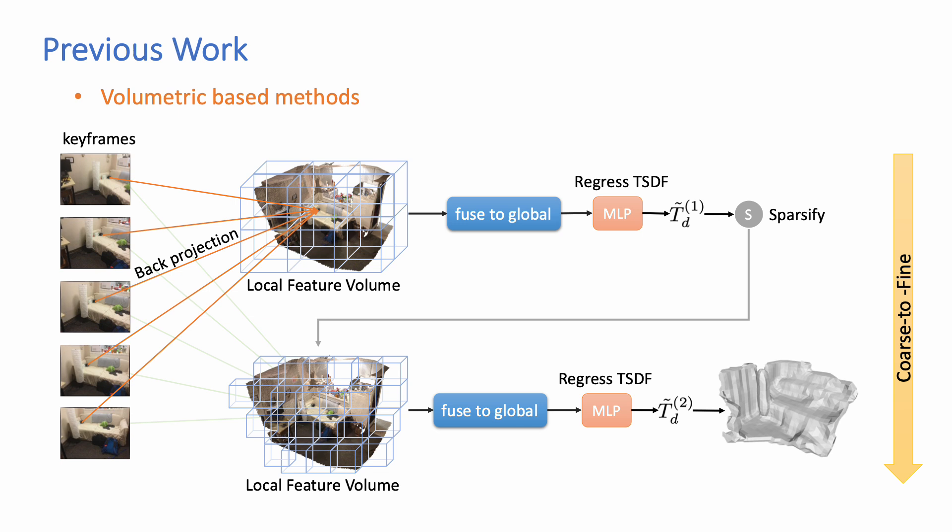Alternatively, recent works adopt a volumetric feature fusion pipeline. They have two key components. The first one is the local-to-global feature fusion to achieve globally consistent reconstruction, and the second one is the volume sparsification from coarse to fine to save memory consumption.